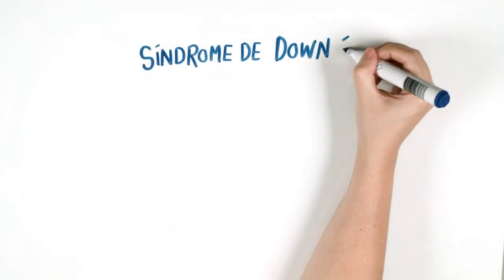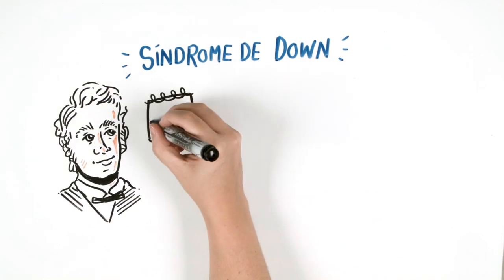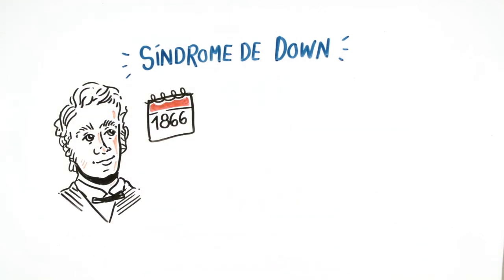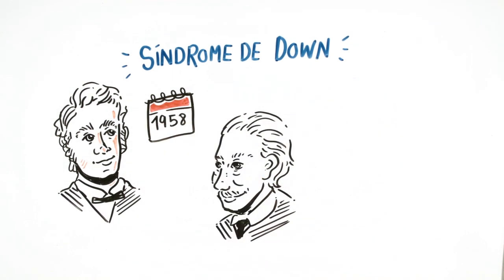This syndrome is named after John Langdon Down, who identified it in 1866. But he never got to find out the cause of it. In 1958, Jérôme Lejeune discovered that it was caused by an alteration in the chromosome.